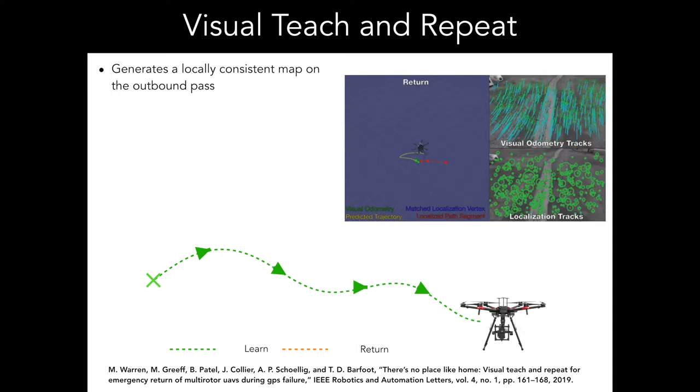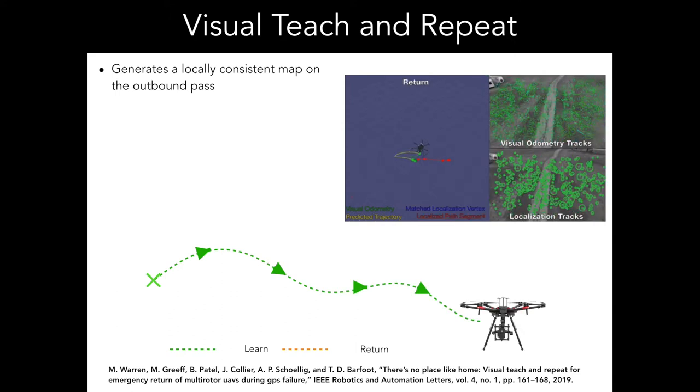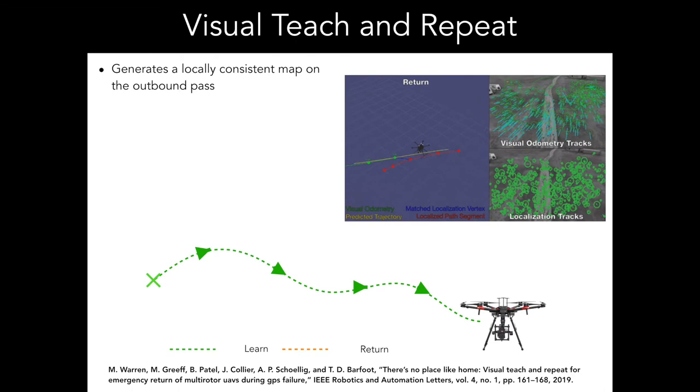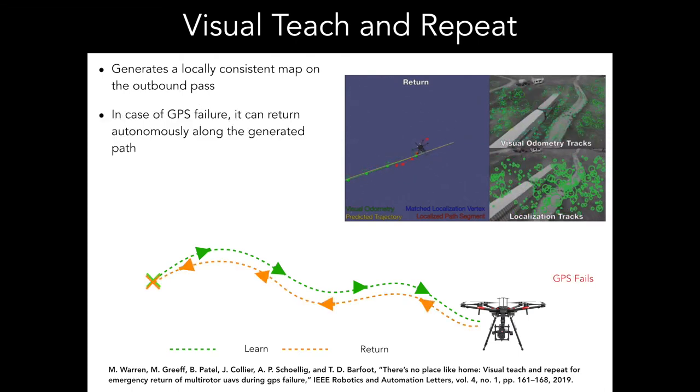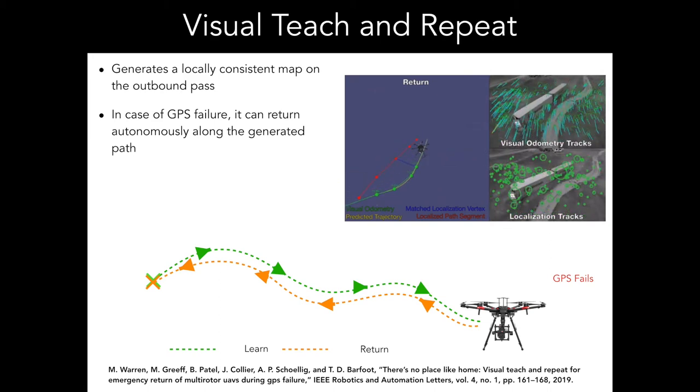With this system, the UAV generates a locally consistent map on an outbound pass flown either manually or under GPS control. In the case of GPS failure, the UAV can then return autonomously along this generated path.